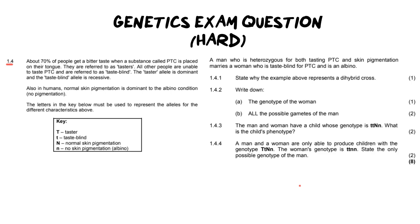It says about 70% of people get a bitter taste when a substance called PTC is placed on their tongue. They are referred to as tasters. All the other people are unable to taste PTC and we call them taste blind. The taster allele is, and this is important, dominant and taste blind is recessive.